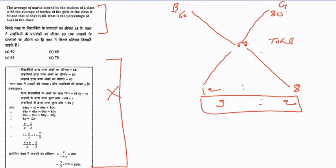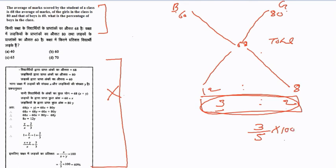So the number of boys in the class is 3 and the number of girls is 2, giving a total of 5 students. The total number of students in the class is not given in the question, but that doesn't matter. The percentage of boys is 3 divided by 5 into 100, which equals 60%. Option B is the right answer.